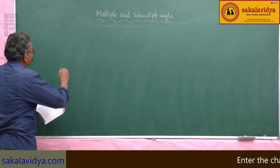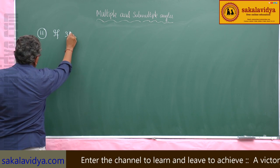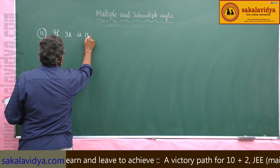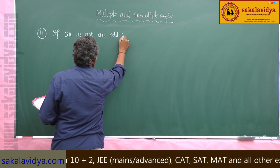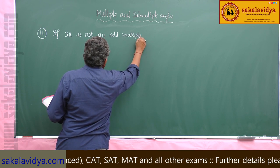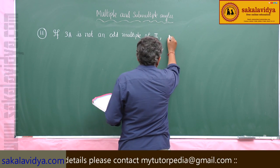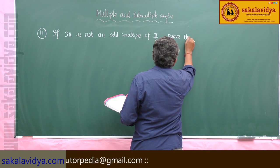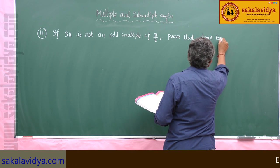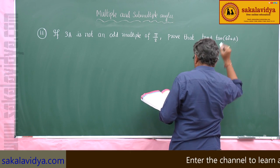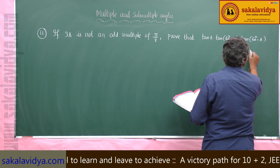11th problem: if 3A is not an odd multiple of π/2, prove that tan A · tan(60° + A) · tan(60° - A) is equal to tan 3A.